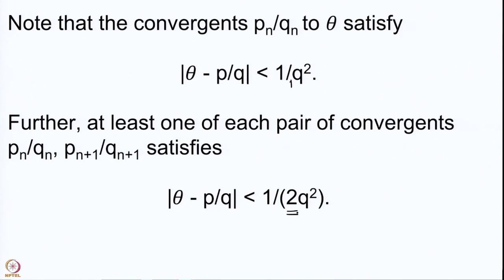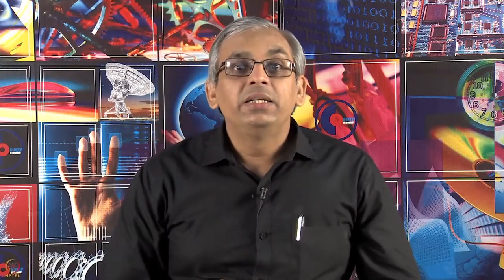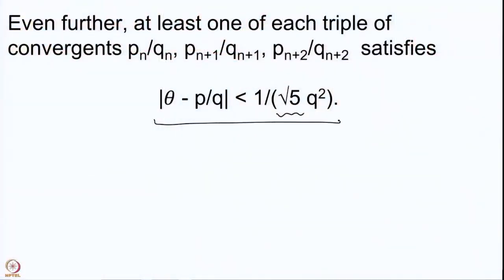This is an improvement. Further, we actually saw that this is also not the final result. If you consider one of consecutive triples of convergents, then you even get a better result, which is that the 2 can be further improved to √5·Q², giving us a sequence of rational numbers converging to any given real θ with |θ - P/Q| < 1/(√5·Q²).